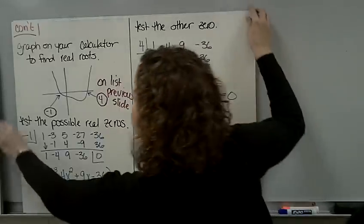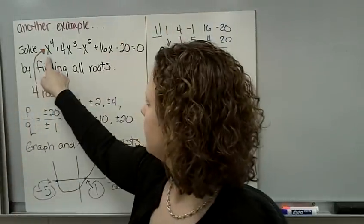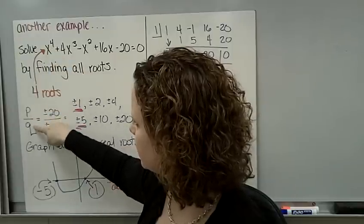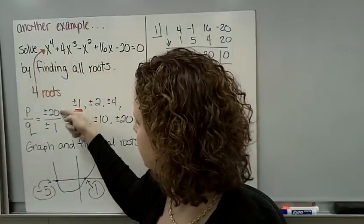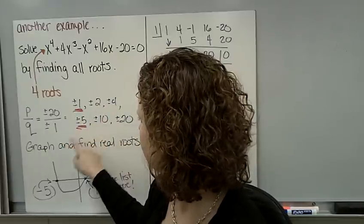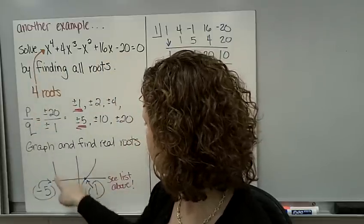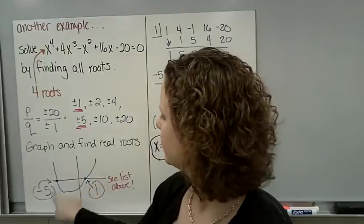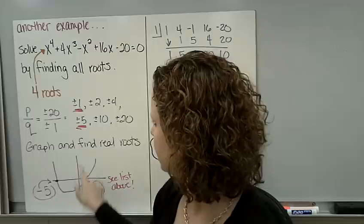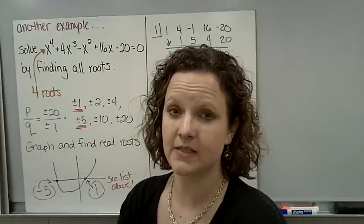Let's try one more example. Solve this polynomial by finding all the roots. I need 4 roots again. I do p over q, which is -20 over 1. And I list all my possible roots. 1 times 20, 2 times 10, 4 times 5. Graph this polynomial in your calculator and either use your table or just trace your graph and look that it crosses the x-axis at -5 and 1. -5 and 1 are on the list. So I think it's going to work, but let's test them.